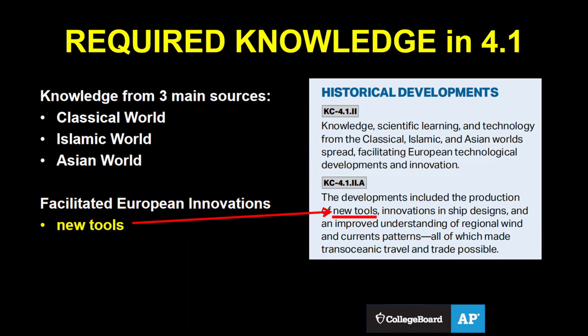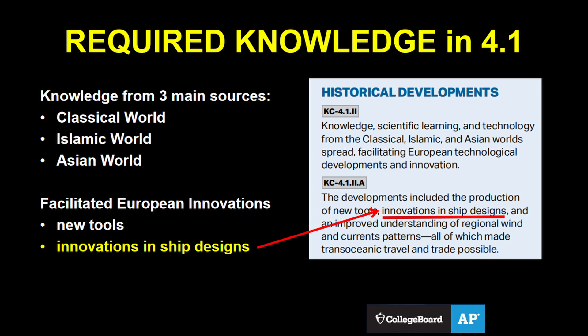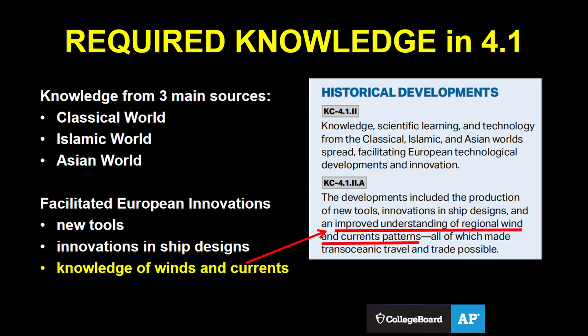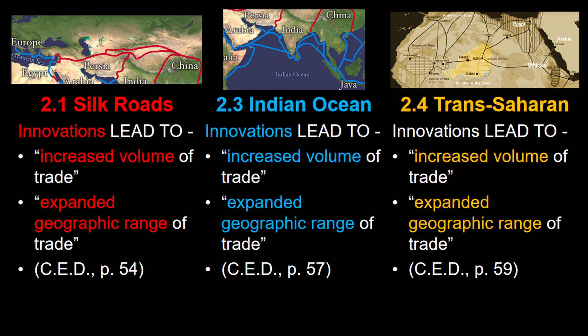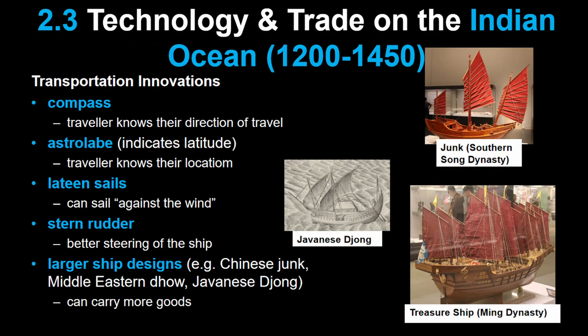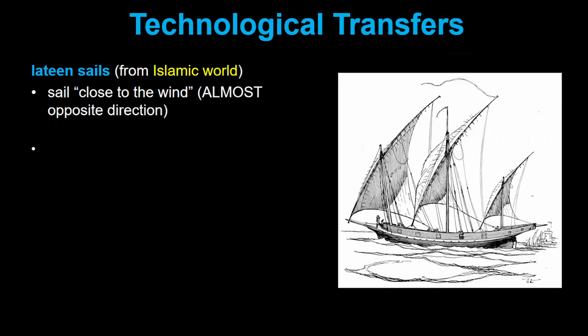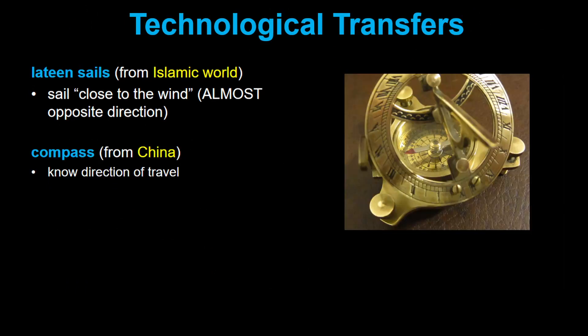These European technological developments included new tools, innovations in ship designs, and an improved understanding of regional wind and current patterns. These developments all made trans-oceanic trade possible. So innovations are helping to facilitate trade — reminds me of Unit 2, which had many examples of technology helping to increase trade and increase the geographic range of that trade. In fact, we're talking about a lot of the same technologies, especially from 2.3 Indian Ocean trade routes, like lateen sails from the Islamic world and the compass from China.